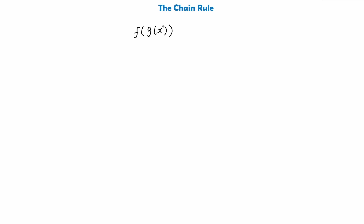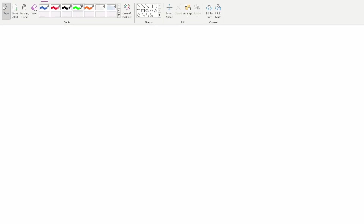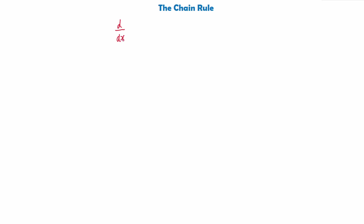Today we're going to be looking at how we would differentiate a composite function. If the functions f and g are defined on suitable domains, then we use the chain rule, given by the formula: the derivative d/dx of a composite function f(g(x)) is equal to f'(g(x)) multiplied by g'(x).